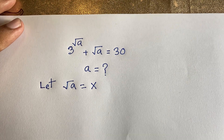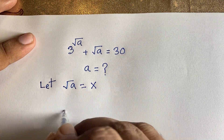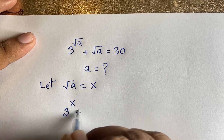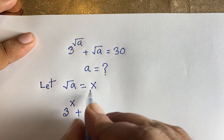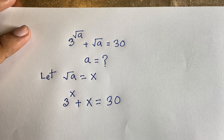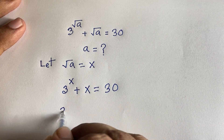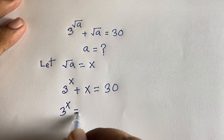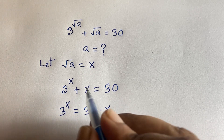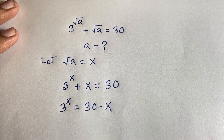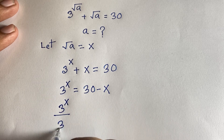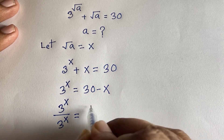With this substitution, the equation becomes 3 to the power (x plus x) is equal to 30, which simplifies to 3 to the power 2x equals 30. Now I move x to the right side: 3 to the power x is equal to 30 minus x.